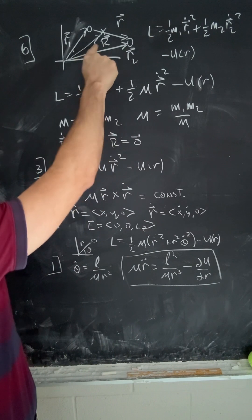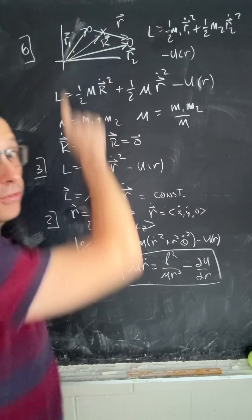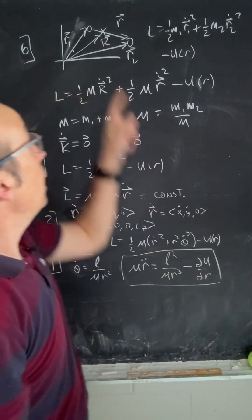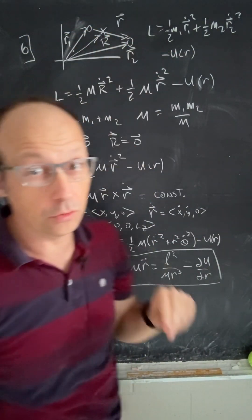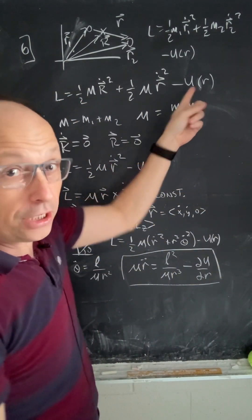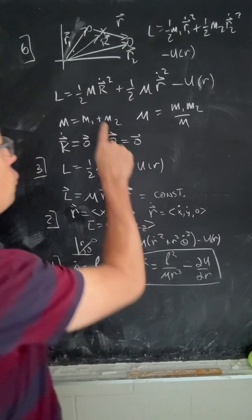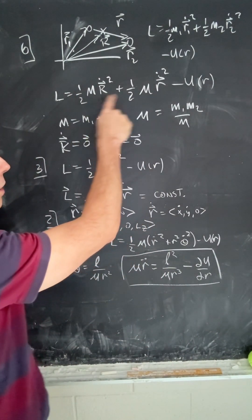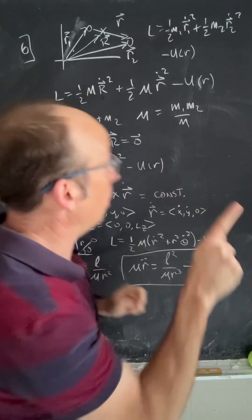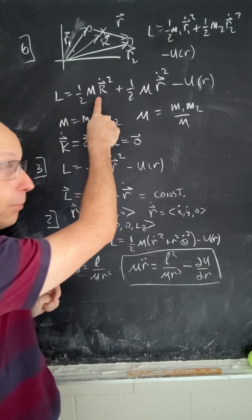So what we do then is we write the objects in terms of their location of the center of mass, capital R, and the vector from R1 to R2, lowercase r. If you do that, because the potential only depends on the relative positions of those two, you can do a Lagrangian in those two, lots of math there, and there's no potential term for capital R.